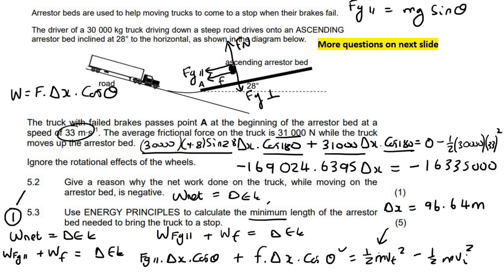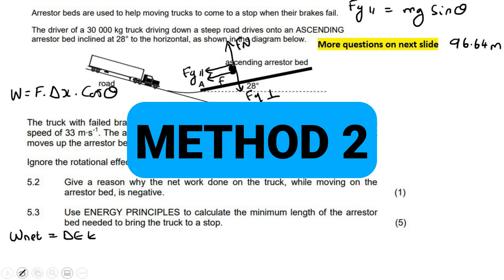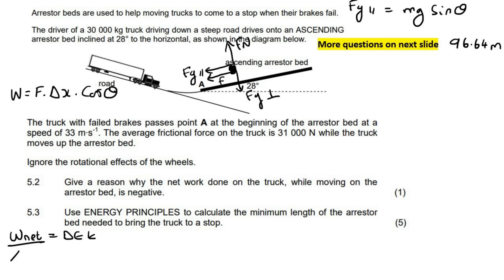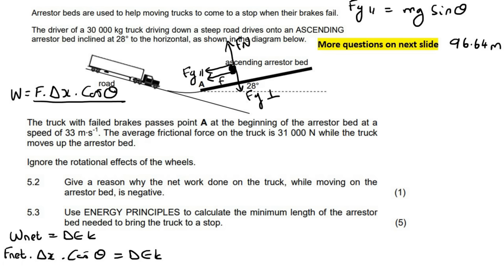Now for the second method: instead of expanding W_net into individual works, some learners change W_net to F_net × ΔX × cos θ. So you write: (F_G parallel + friction force) × ΔX × cos θ = delta E_k. F_G parallel is m·g·sin θ, so that's 30,000 × 9.8 × sin 28 degrees, plus the friction force of 31,000. Together these forces act down the slope while the object moves up, so cos θ is cos 180.